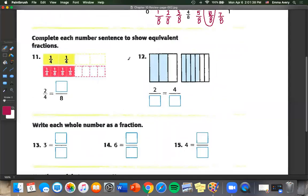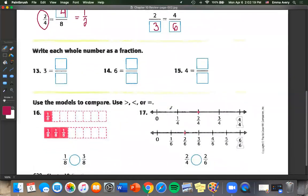Number 11, complete each number sentence to show equivalent fractions. So they want them to be equal. So it shows us one fourth plus one fourth, two fourths, equals one, two, three, four eighths. We also know one fourth plus one fourth, two fourths, equals one half. Over here, we've got two shaded in of one, two, three whole parts. And over here, we have four shaded in of one, two, three, four, five, six whole parts.